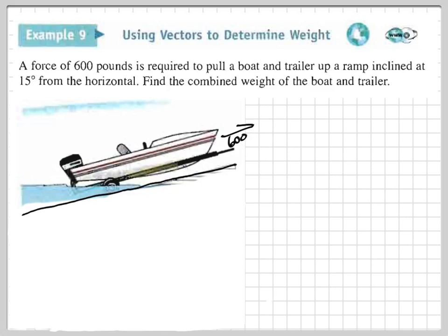So here's our ramp, and here's the horizontal. That means this angle right here is our 15 degrees. Now, we see a triangle right here, but this is not the triangle that's going to help us out because, as I stated earlier, the vector that we want goes straight down from the wheel. So this is completely vertical. This is completely horizontal. Now, if this is completely vertical and this is completely horizontal, that means we have a right angle right here. But that's the direction of the vector that we're trying to find, which is the combined weight of the boat and trailer.